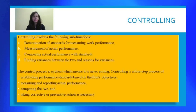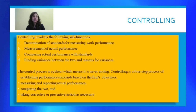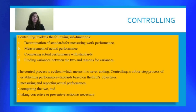Here are some sub-functions of controlling. First is the determination of standards for measuring work performance. Then measurement of actual performance. Then comparing the actual performance with the standard set and finding out the variations between the two and the reasons for variations. Controlling is very important because it accomplishes organizational goals, is important in judging the accuracy of the standard set, makes efficient use of resources, improves employee motivation, ensures order and discipline in the organization, and facilitates coordination in action.